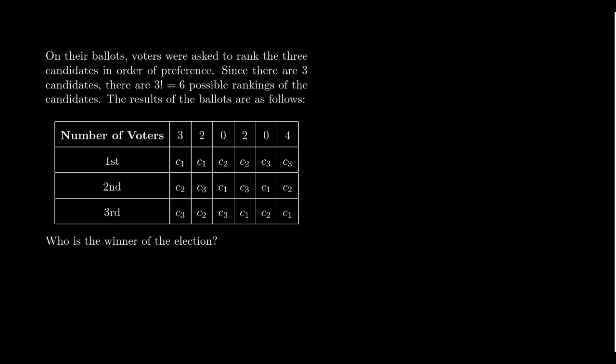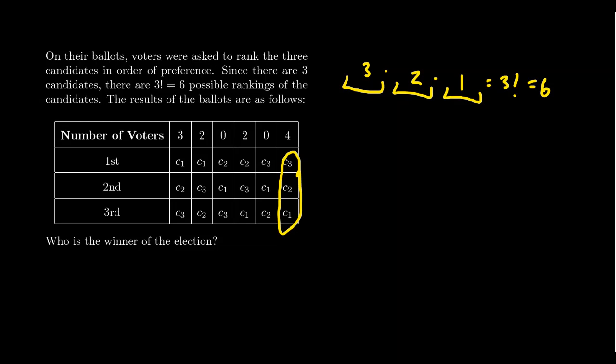With three candidates and a full ranking required, you have three options for first choice, two for second, and one for last. That's three times two times one — three factorial — which equals six. So there are six possible ballots you could cast: candidate one-two-three, one-three-two, two-one-three, two-three-one, three-one-two, or three-two-one. Those are the six possible rankings.